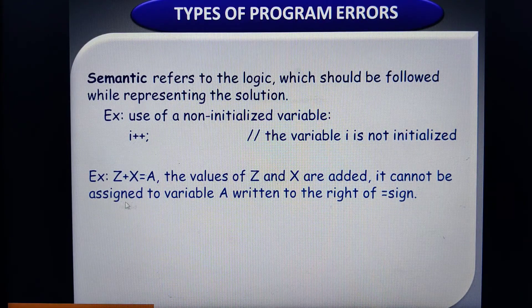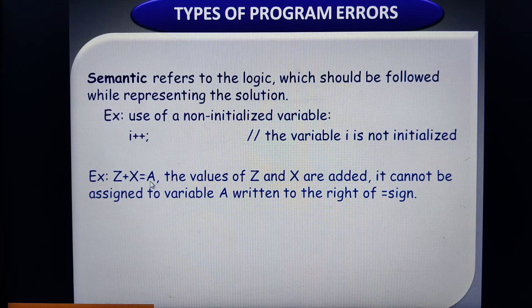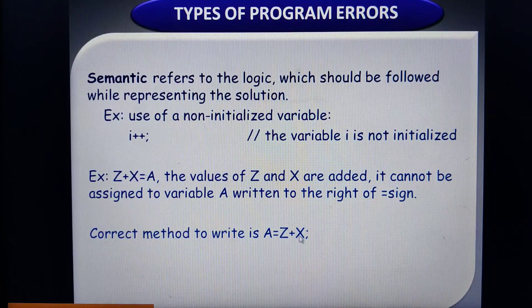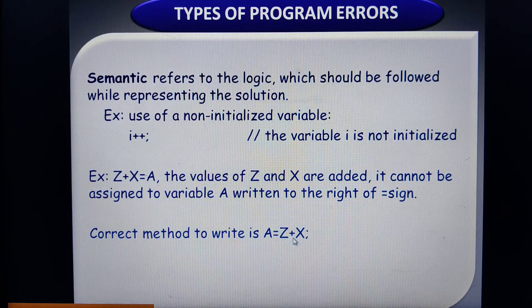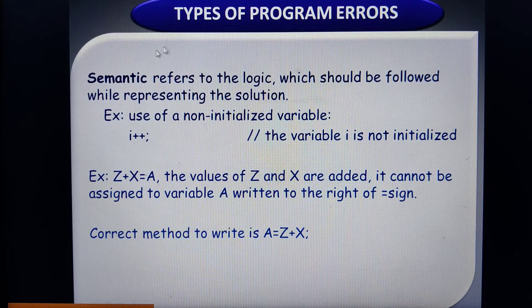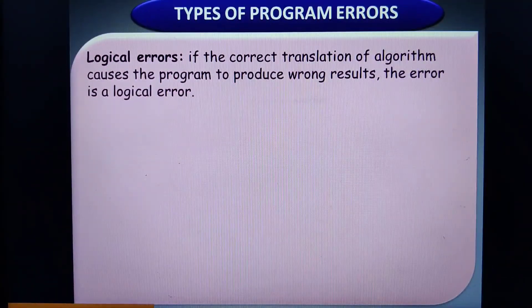Another semantic error example: suppose values z and x should be added and stored in variable a, but if written in the wrong order — violating the correct way of using the assignment operator in C or C++. The correct logic is: right-hand side calculation (z + x) should be assigned to the left-hand side variable using the assignment operator. Violating this logic generates semantic errors.